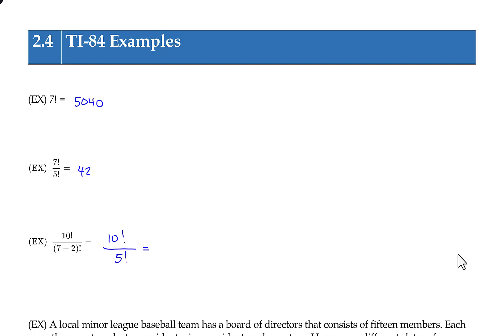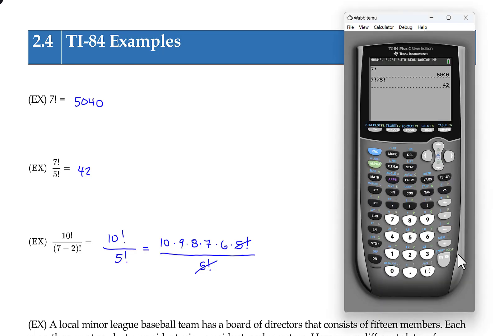So the factorial doesn't distribute into parentheses like that. Now you can do this by hand. Like you could do 10 times 9 times 8 times 7 times 6 times 5 factorial. And you can stop this at any point you want because it's a recursive process. And you could stop it at the 5 factorial because you already have a 5 factorial in the denominator. And then you just need to find 10 times 9 times 8 times 7 times 6. And you can do that on the calculator. Or you can use the built-in features for factorial. Either way is perfectly fine.